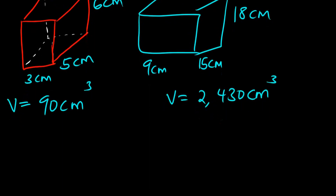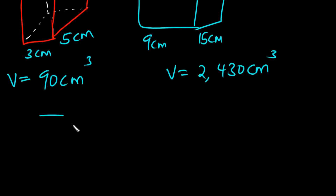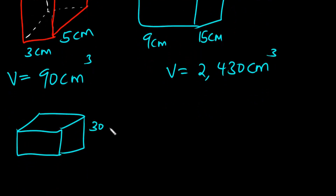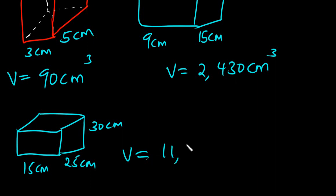Let's also look at another enlargement of the same cuboid. Let's say we decide to enlarge it by a scale factor of 5, multiplying each of the sides by 5. So 6 × 5 = 30 cm, 5 × 5 = 25 cm, and 3 × 5 = 15 cm. The volume of that cuboid is 15 × 25 × 30 = 11,250 cm³.